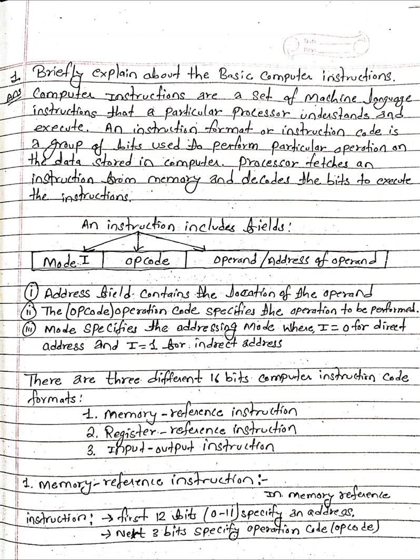Address field contains the location of operand. The opcode or operation code specifies the operation to be performed. Mode specifies the addressing mode where i equals 0 for direct address and i equals 1 for indirect address.